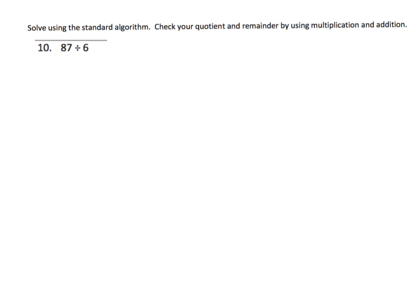And the last problem we're going to do for this video is 87 divided by 6. So we've got 87 divided by 6. And again, we're going to be thinking about place value. And we've got 8 tens divided amongst 6 groups. So each group is going to get 1 ten. And then we're going to have 2 tens left over.